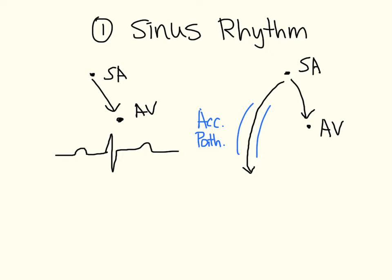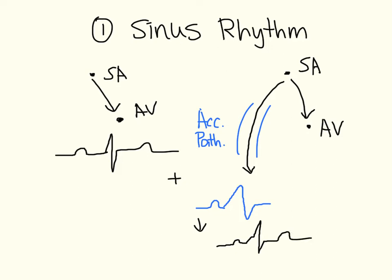This is what it would look like on an ECG. Here is the SA node — it reaches the accessory pathway and depolarizes the ventricles earlier and wider. Since there are two different ways to depolarize the ventricles, the ventricle depolarizes first through the accessory pathway, and then the regular depolarization catches up. What you see is this earlier depolarization — this is the delta wave. You can also see that the resultant QRS complex is wide.